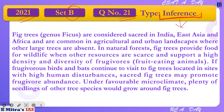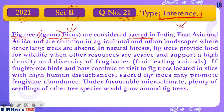Let's start reading the passage. 'Fig trees, genus Ficus' — saari trees jo hain wo groups mein divided hoti hain, so fig tree ficus branch ko belong karti hai. Fig trees are considered sacred in India — sacred ka matlab hai holy ya pooja se related, worshipping se related — are sacred in India, East Asia, and Africa.